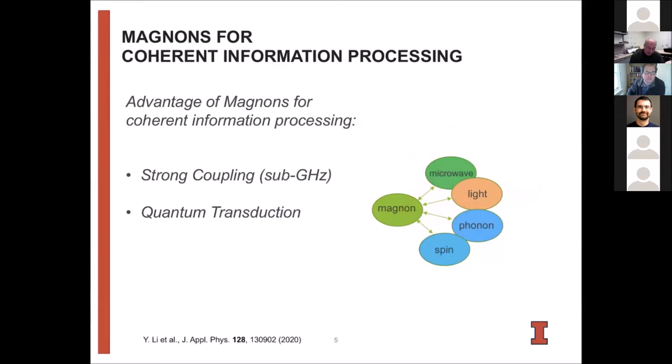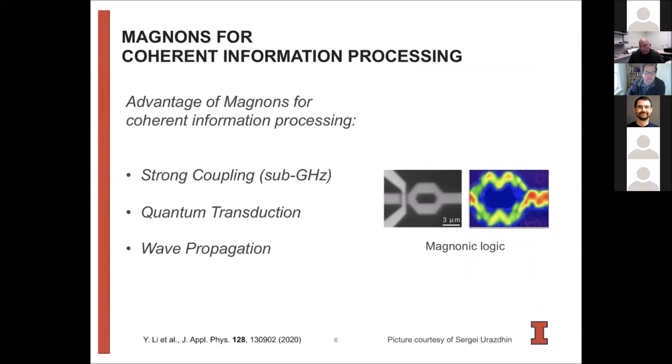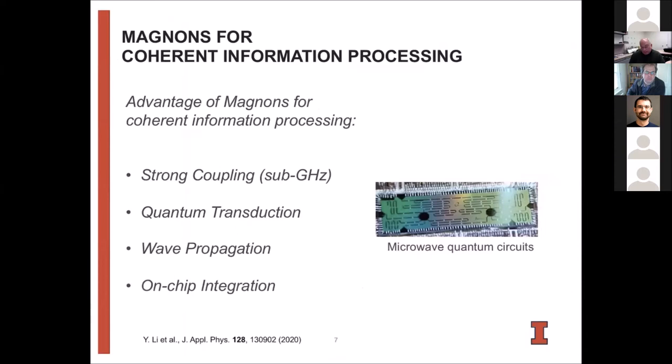I already mentioned that magnons are inherently wave-like phenomena. So we also call them spin waves, right? And so you can think of using kind of interference phenomena to create some logic functionality. And the last thing, what makes magnons nice is their frequency is in the microwave regime. And microwaves is what typically is used for quantum circuitry, for example, when you use superconducting qubits. So you can easily think about how to integrate them into such microwave circuitry and that will be a good part of the discussion that we have here. And if you're really interested in a more detailed discussion of these ideas, I recommend this review paper here that we published last year, where we discuss this even in much more detail.